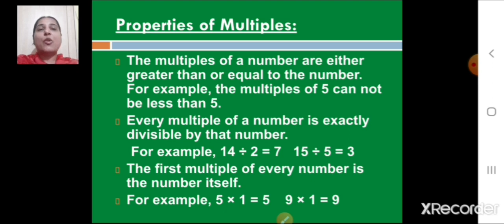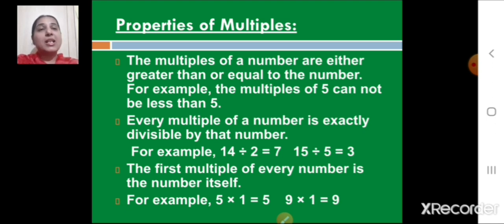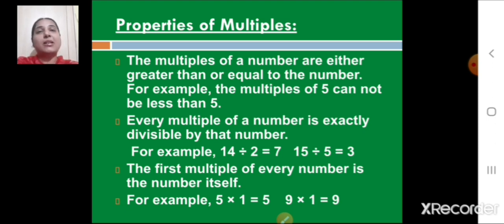The fifth property is: every multiple of a number is exactly divisible by that number. For example, 14 ÷ 2 = 7, and 15 ÷ 5 = 3. Also, the first multiple of every number is the number itself, since 5 × 1 = 5 and 9 × 1 = 9.